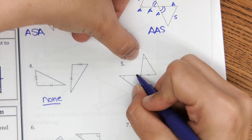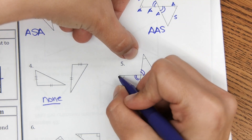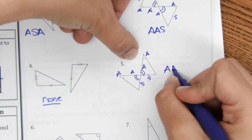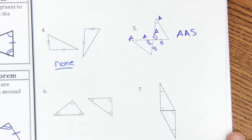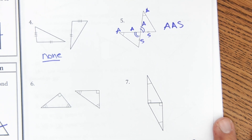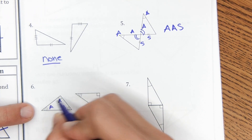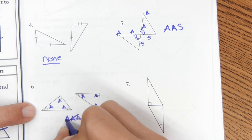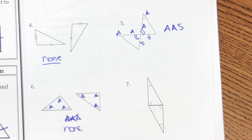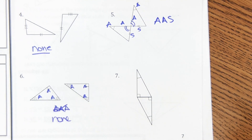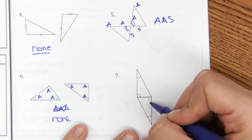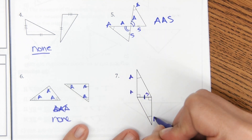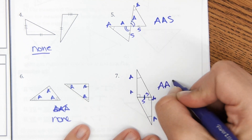For number five, the vertical angles are also in common, giving you angle-angle-side matching AAS. For number six, you have angle-angle-angle, which is great, but that doesn't prove congruence — so you can't prove them congruent. For number seven, you have two angles and a shared side, giving you angle-angle-side matching, so that's AAS.